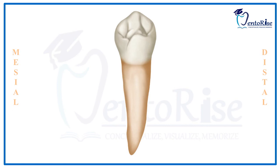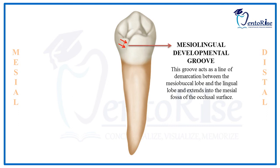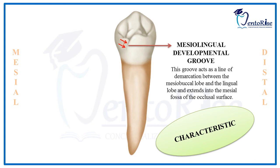One characteristic feature present only on the lingual surface of permanent mandibular 1st premolars is the mesio-lingual developmental groove. This groove acts as a line of demarcation between the mesio-buccal lobe and the lingual lobe, and extends into the mesial fossa of the occlusal surface. It is present on the lingual surface and runs mesially, which is why it is called the mesio-lingual developmental groove.